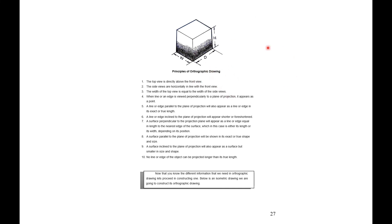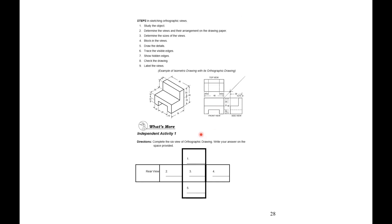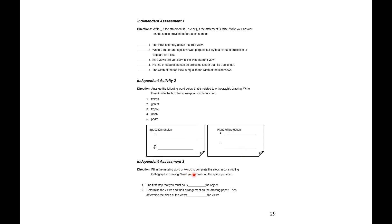Here are the principles of orthographic drawing. For the module activities: Independent Activity 1 — complete the sixth view of the orthographic drawing, writing your answer on the space provided. Independent Assessment 1 — write T if the statement is true or F if false. Independent Activity 2 — arrange the words related to orthographic drawing and write them in the box corresponding to their function, covering the three space dimensions and two planes of projection. Independent Assessment 2 — fill in the missing word or words to complete the steps in constructing orthographic drawing.